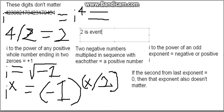2 is even, two negative numbers multiplied by each other equals a positive number. i to the power of 4, and i to the power of x equals negative 1 to the power of quantity x divided by 2, so i to the power of 4 equals positive 1.